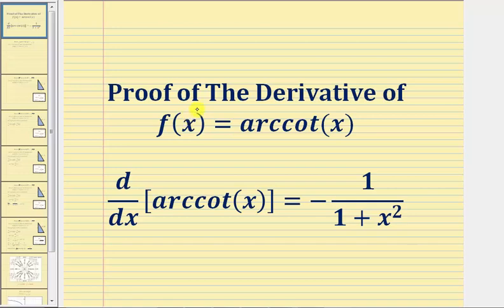Welcome to a proof of the derivative of f of x equals arc cotangent x. We'll prove that the derivative of arc cotangent x with respect to x equals negative one divided by the quantity one plus x squared.